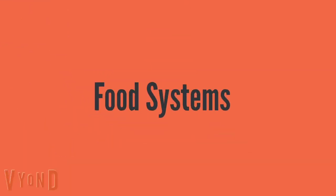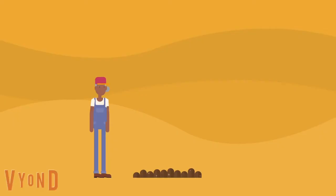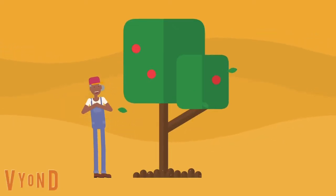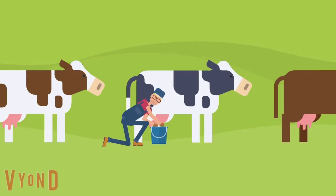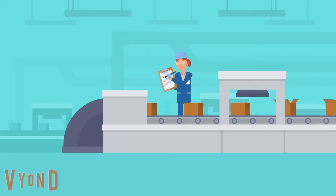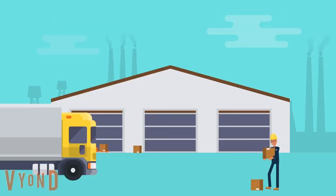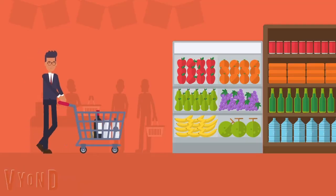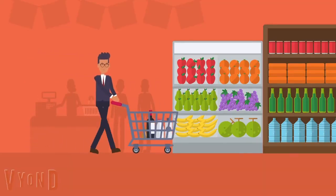First, let's talk about food systems. Food systems is a cycle by how food is grown, raised, processed, packaged, distributed, sold, prepared, and consumed.